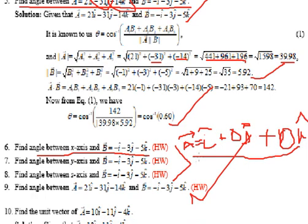The value of a: 1 squared plus 0 squared plus 0 squared, square root — so the magnitude is 1. The value of b: root over negative 1 squared plus negative 3 squared plus negative 5 squared — which gives root over 35.